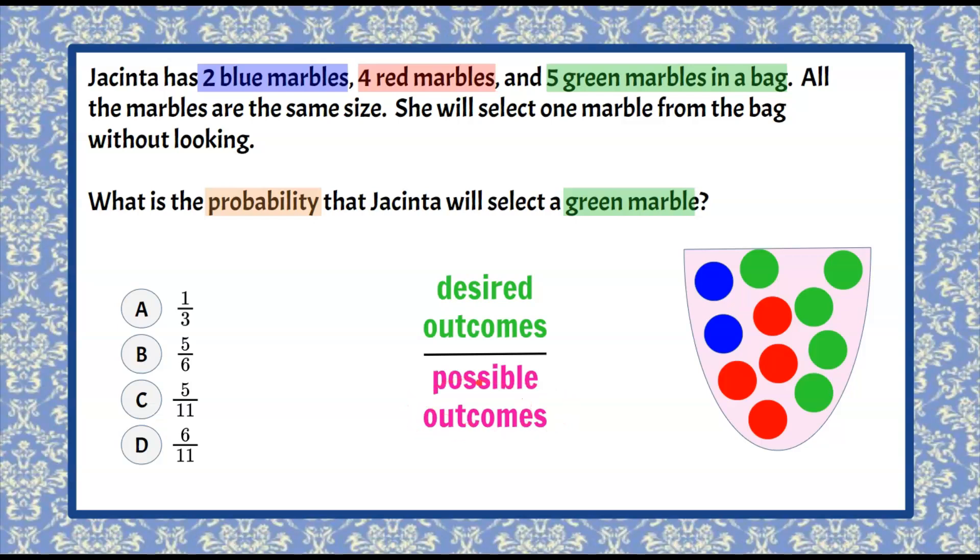So our possible outcomes we're going to look at first. That is how many things could happen when she reached into the bag. When she reaches into the bag, there are eleven marbles in the bag.